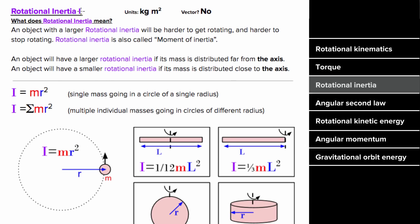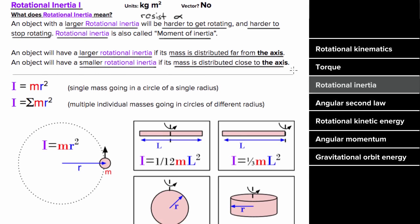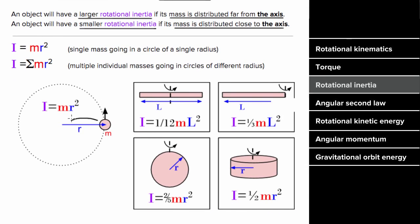What does rotational inertia mean? An object with large rotational inertia is hard to get rotating and hard to stop rotating. Basically, rotational inertia tells you how much an object resists angular acceleration, just like regular inertia tells how much an object resists regular acceleration. This is often called the moment of inertia. You can increase rotational inertia by placing mass far from the axis of rotation, and make it smaller by placing mass closer to the axis.